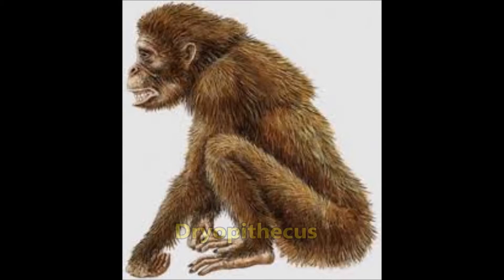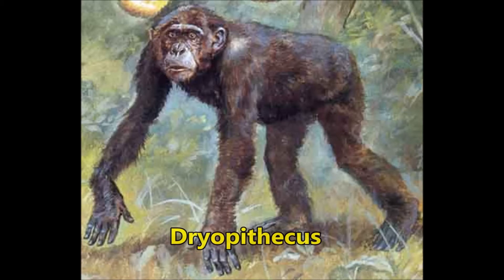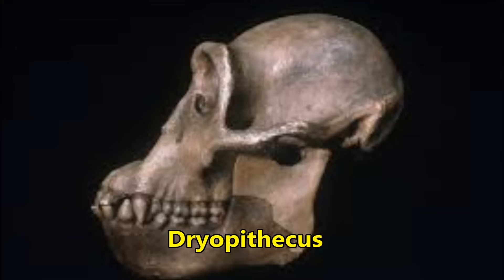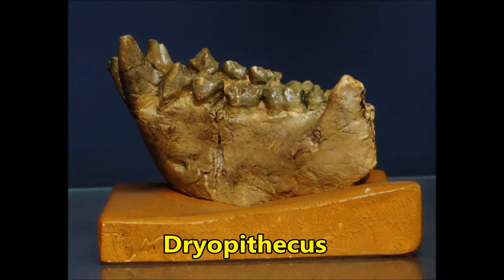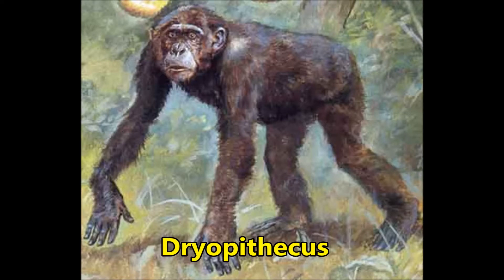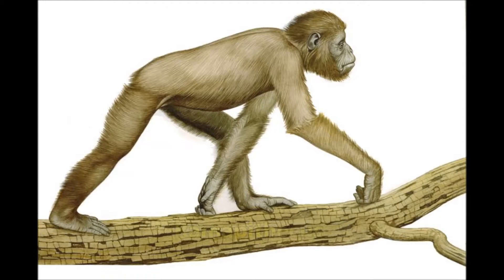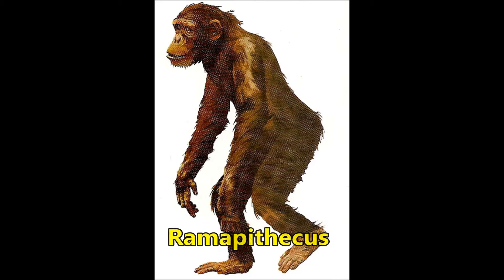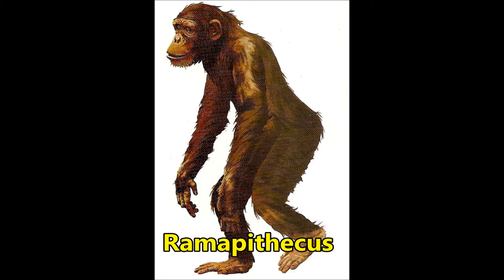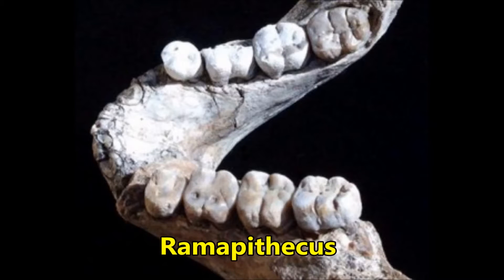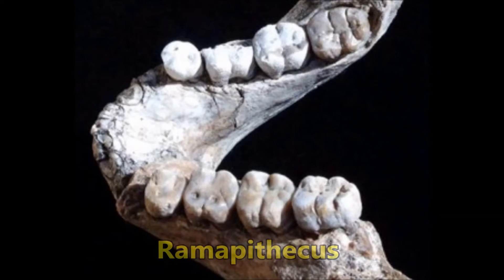Dryopithecus was about 4 feet long, a tree-dwelling ape that originated in eastern Africa about 15 million years ago. It had a short face with large eyes, long arms and legs. Ramapithecus was considered a possible human ancestor on the basis of reconstructed jaw and dental characteristics of fragmentary fossils.